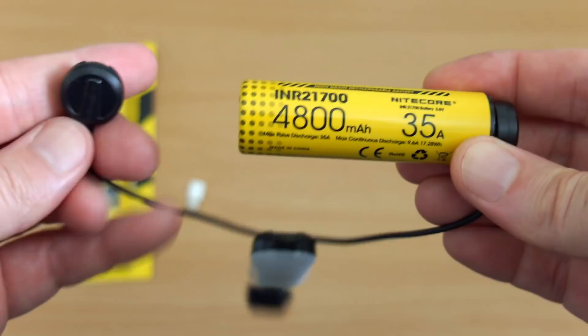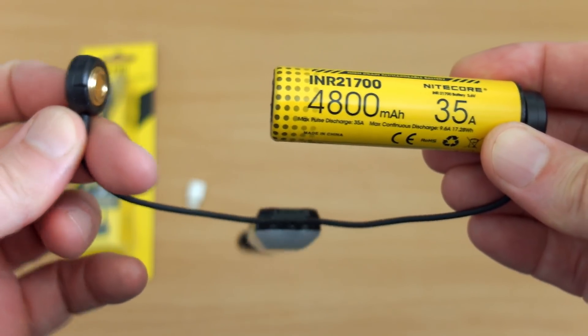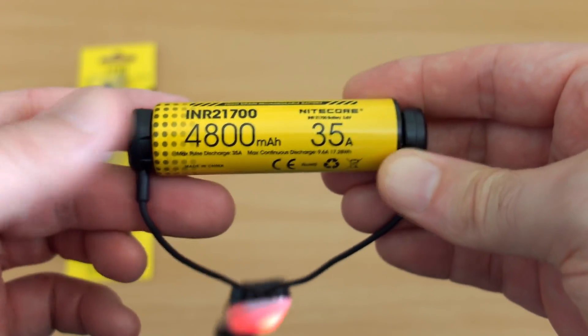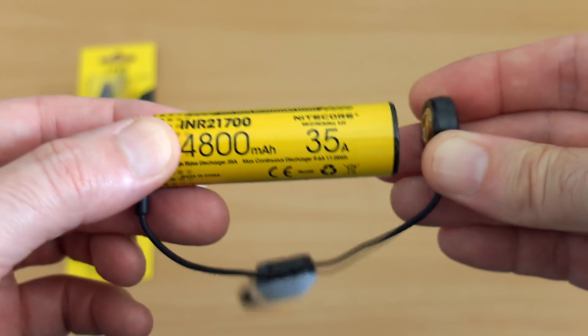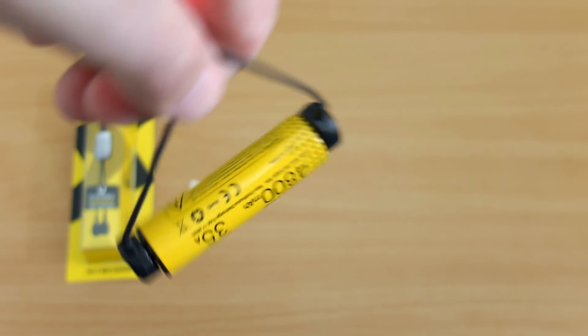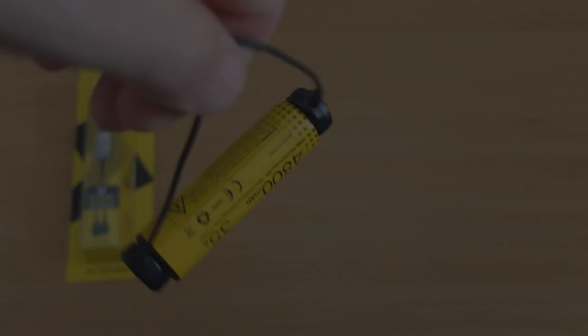That means with larger batteries, 21700 even the protected cells which most chargers won't fit, this won't have any problems at all. You can see here shaking around, no problem at all with the flat top cells.